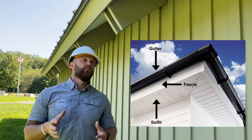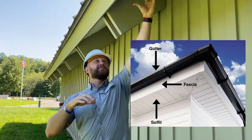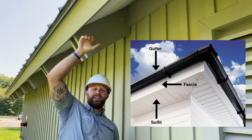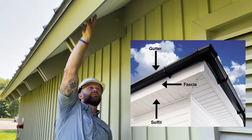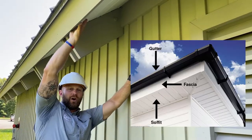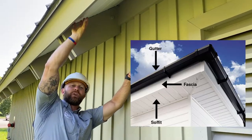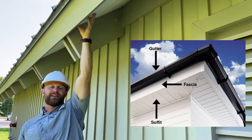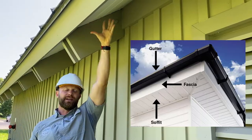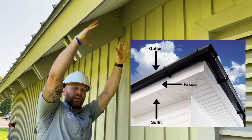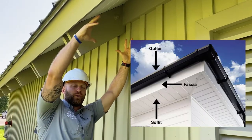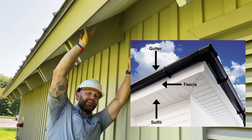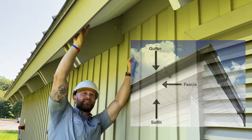Now, what is soffit? Well, soffit is normally the area right underneath the eaves of your roof — typically the overhang under your rafters. What you're going to see a lot of times is these soffits are going to be vented, and that's going to work with your ventilation system on your roof.